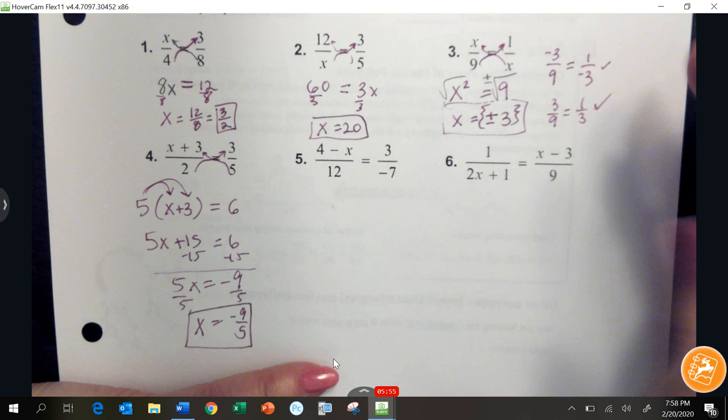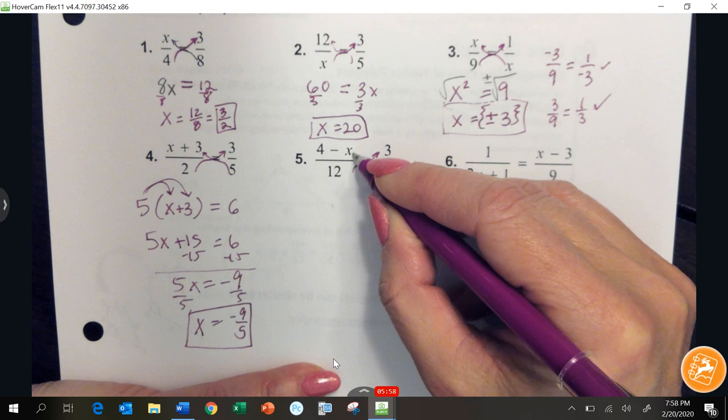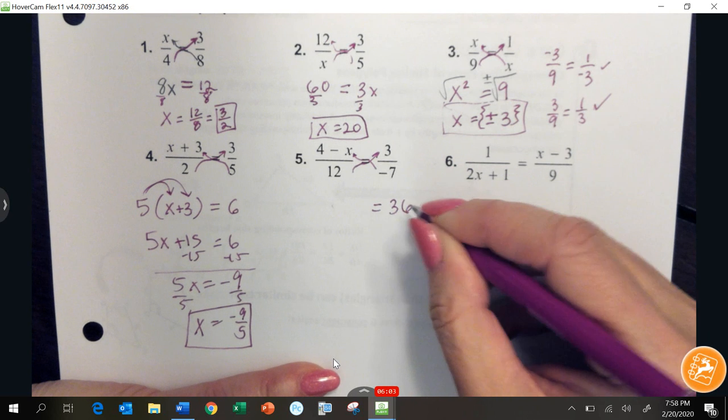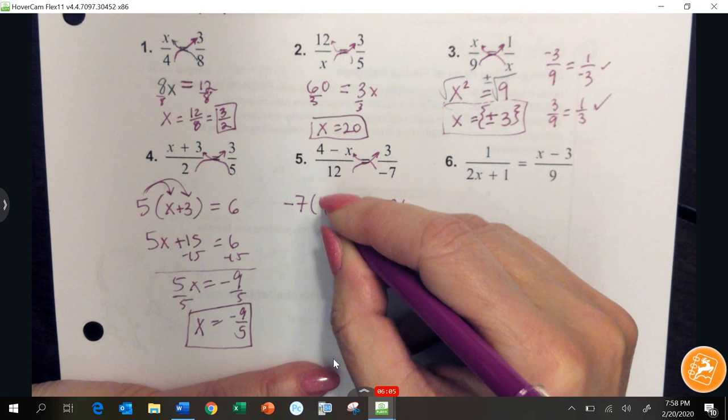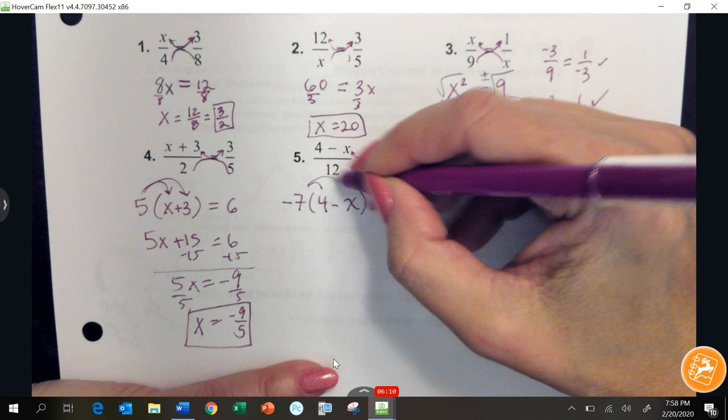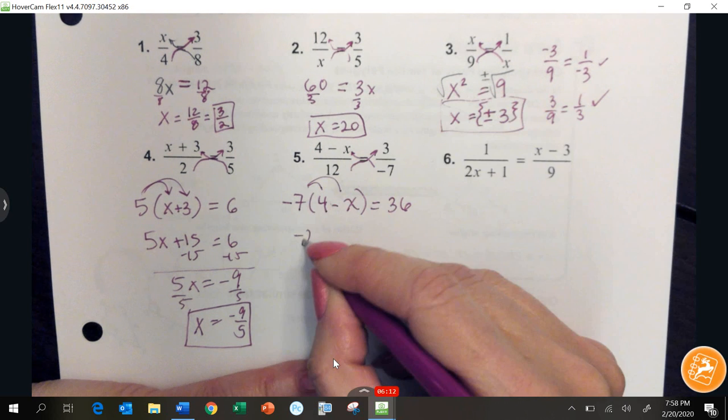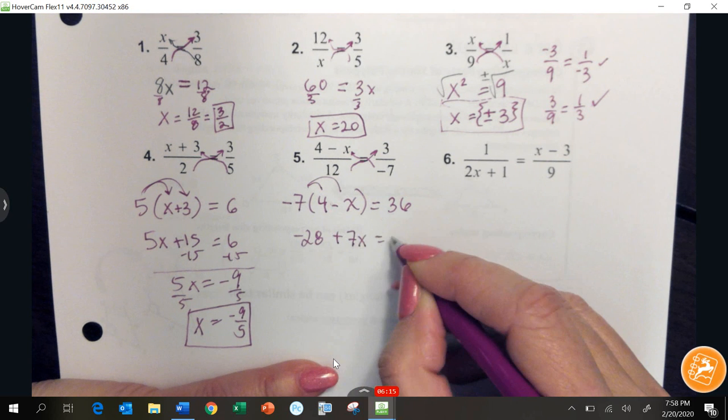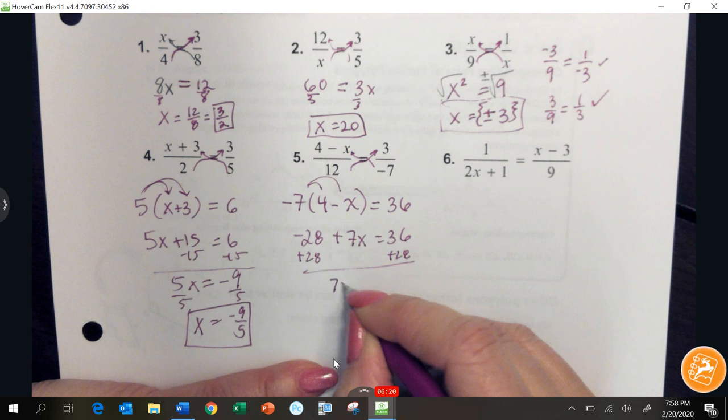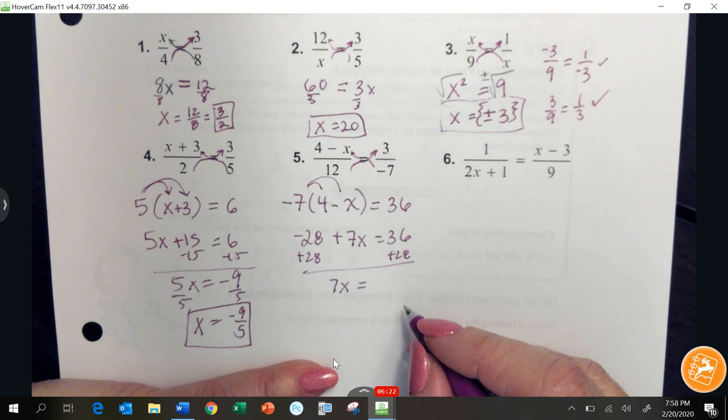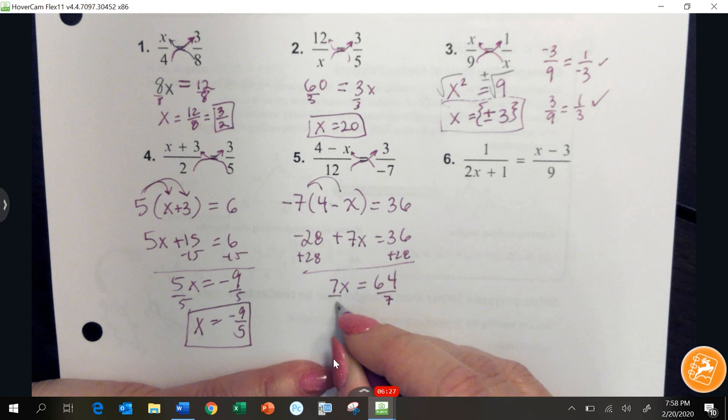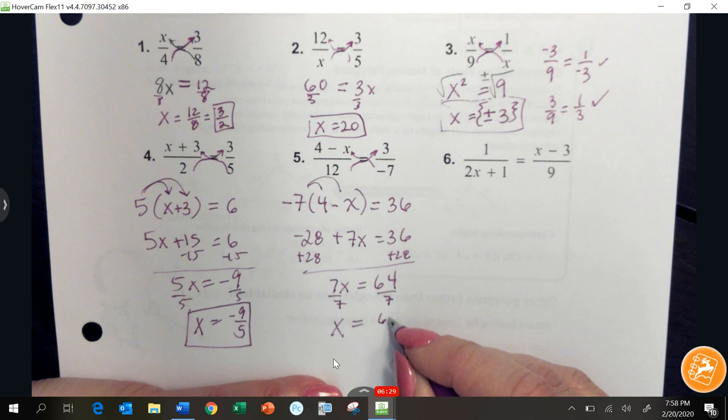Okay. Number 5. Cross multiply up. 12 times 3 is 36. And then on the other side, negative 7 times 4 minus x. I'm going to distribute that negative 7. Negative 28 plus 7x equals 36. Add the 28 to both sides to get 64. 7x equals 64. Divide by 7. That does not reduce. So, 64 sevenths.